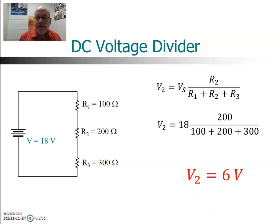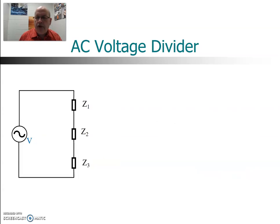So it turns out the AC version of this is almost identical, except in place of R we're going to use Z. So we have three Z's in series. In order to find the voltage across the second one, it would be the source voltage multiplied by the second Z divided by the sum of all the Z's. And of course you do the same thing if you want to do other voltages also, just substituting in Z1 or Z3, if that's the ones you want to look for.